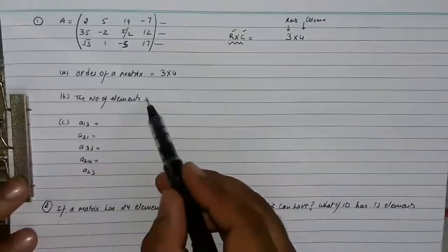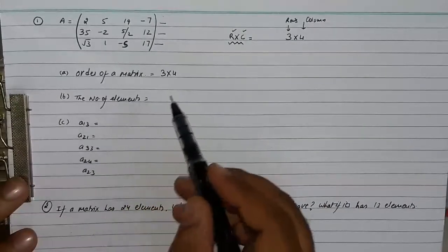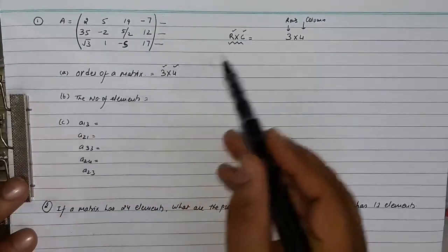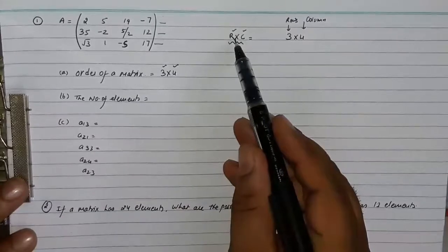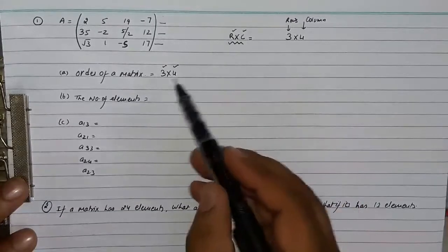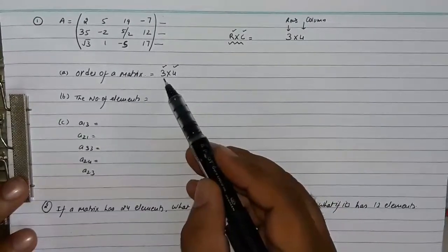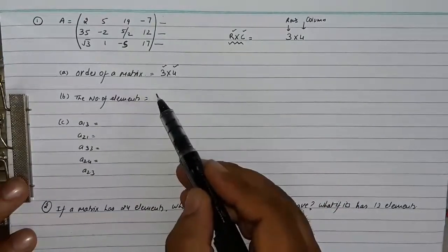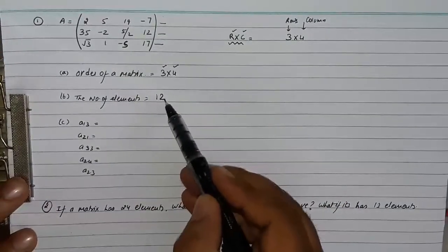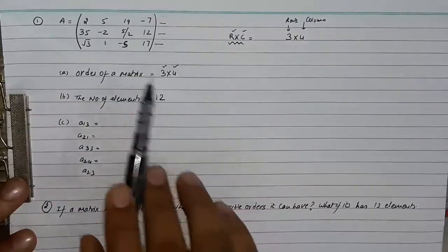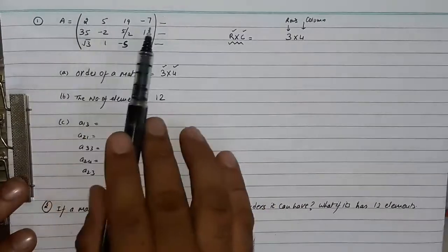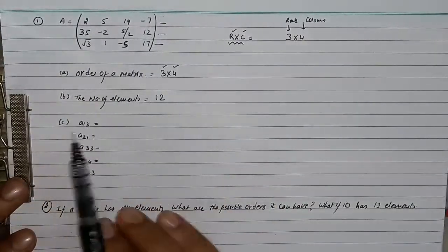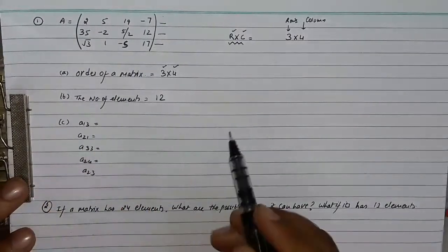Now they are asking for the number of elements. We can easily find out by multiplying the number of rows and number of columns. Because there are 3 rows and 4 columns, the total number of elements is 12.